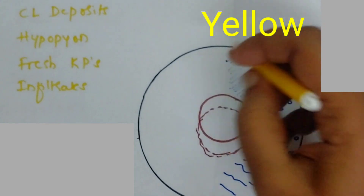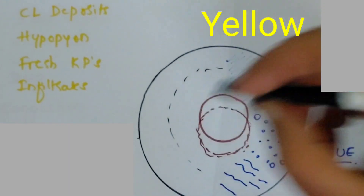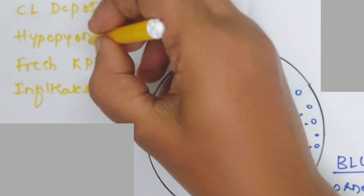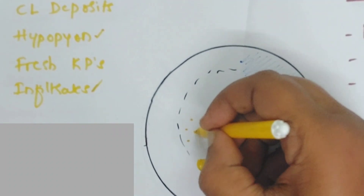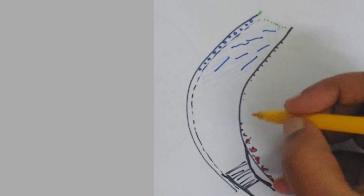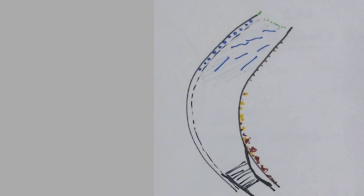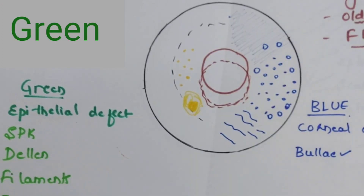Yellow color is used to represent contact lens deposits — the contact lens itself is drawn as a dotted black line, and any deposit is shown in yellow at that position. Yellow also represents hypopyon, which is shown as a shaded area in the anterior chamber below the iris in the oblique section. Fresh KPs on the endothelium in the oblique illumination are also shown in yellow. Infiltrates and the ulcerated area of a corneal ulcer can be represented with yellow color.